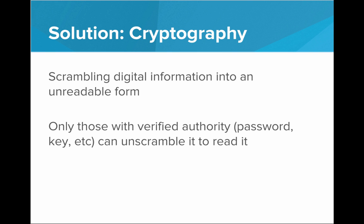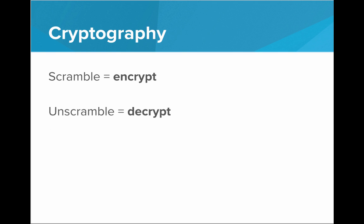Cryptography is scrambling digital information into an unreadable form. That way, only those with verified authority — such as a password or a secret key — can unscramble it to read the original information. It's scrambling those zeros and ones such that even if someone were able to access that data, they wouldn't be able to read it because they don't have the proper authority — they don't have the password or the key. So there's some terminology here: scrambling that digital information, mixing up the zeros and ones, that is encrypting.